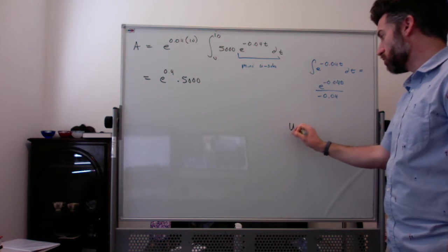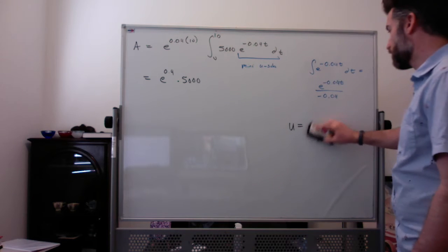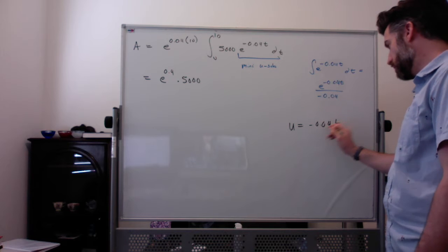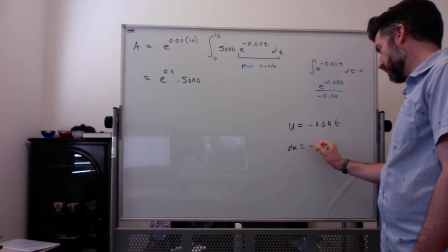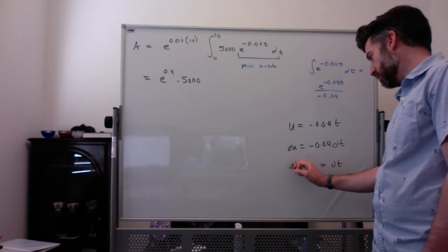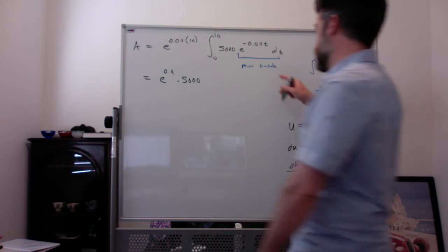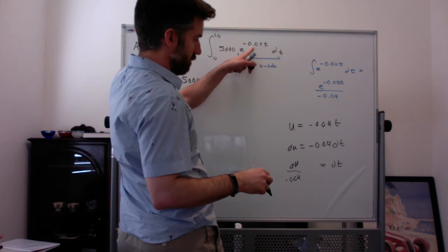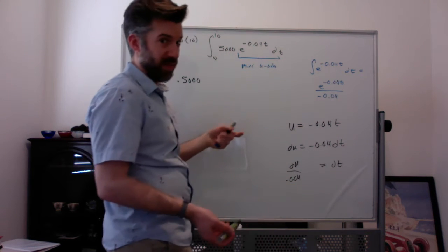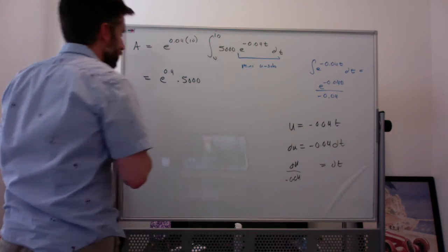If you wanted to, you could do U equal to negative 0.04t. Du is negative 0.04 dt and then dt is du divided by negative 0.04. So when you do this, when you replace this, this will be E to the U and dt will be du over negative 0.04. So when you're getting the integral, that is E to the U divided by this side, which is right there. So, we're going to get this.